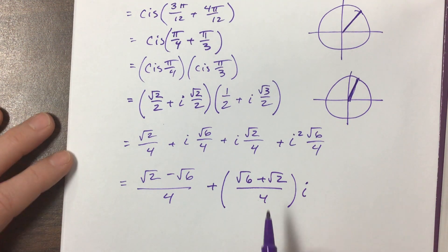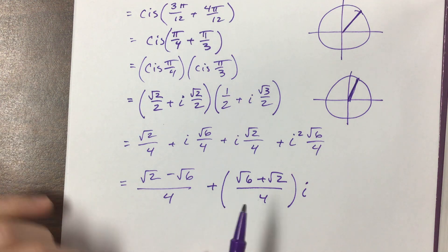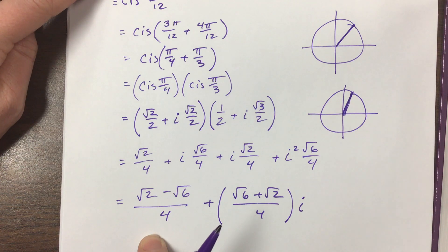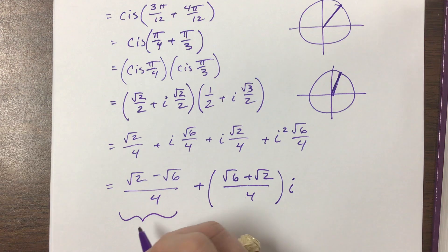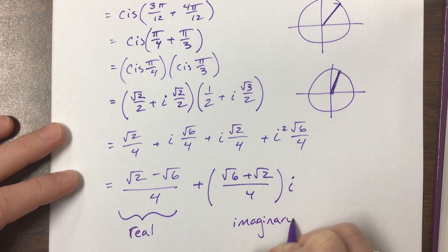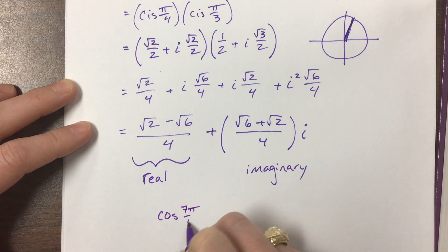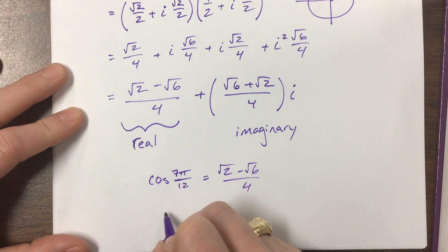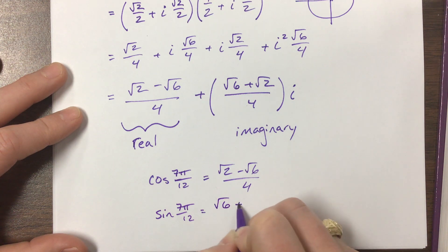The imaginary part is (√6 + √2)/4 times i. Do these numbers look familiar? Hopefully you've already studied the sum and difference identities, because you saw these a lot. Remember, the real part equals cosine and the imaginary part equals sine, so cosine of 7π/12 = (√2 − √6)/4, and sine of 7π/12 = (√6 + √2)/4.